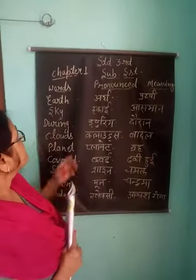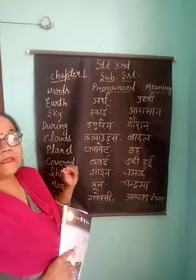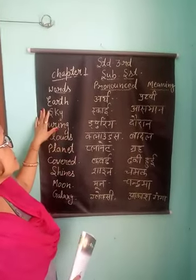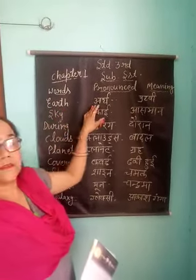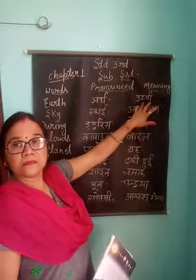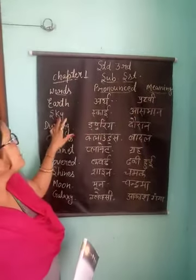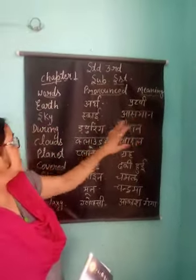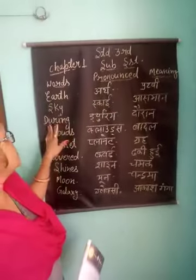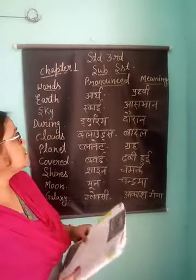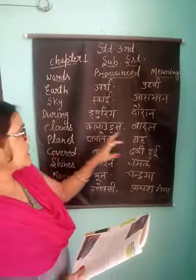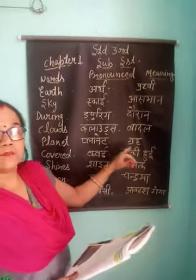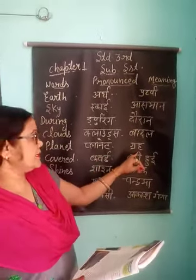Now I will tell you about the meaning — word and meaning. E-A-R-T-H: Earth means Pratvi. S-K-Y: Sky means Asman. D-U-R-I-N-G: During means Dharan. Clouds means Badal. Planet means Grah.